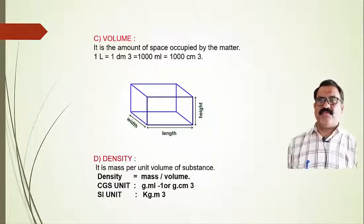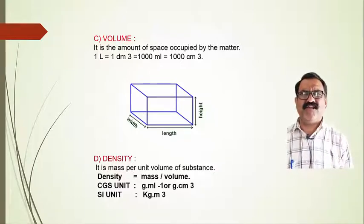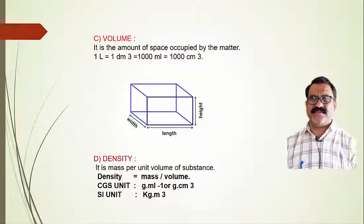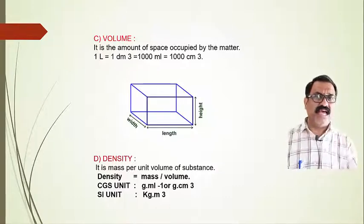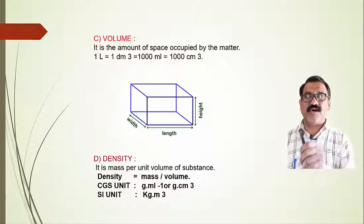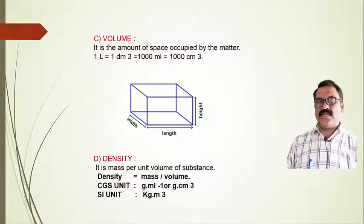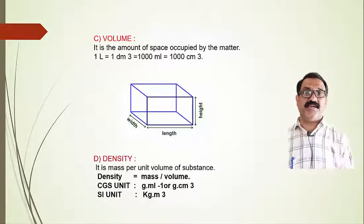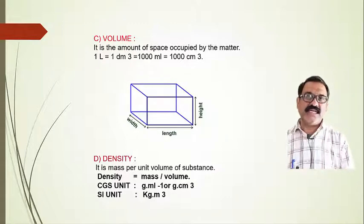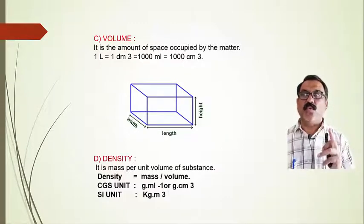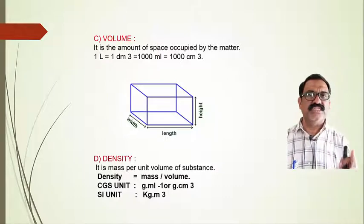Volume measures the amount of space occupied by matter. Volume is length multiplied by width multiplied by height. The unit of volume — one liter — is equal to one decimeter cubed. This one liter or one decimeter cubed is equal to one thousand milliliters, which is also equal to one thousand centimeters cubed.